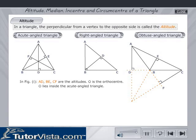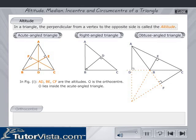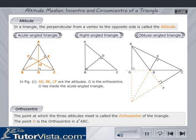In the first figure, AD, BE and CF are the altitudes. O is the point of intersection of the three altitudes called the orthocentre. In the first figure, the orthocentre O lies inside the acute angled triangle.